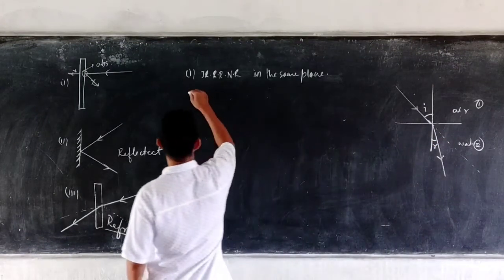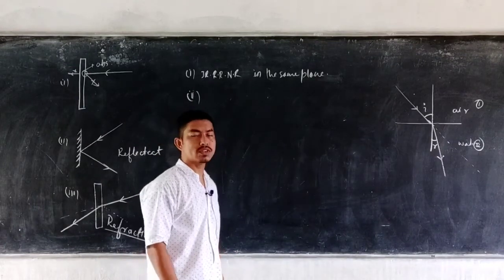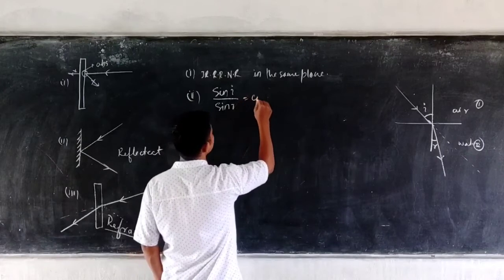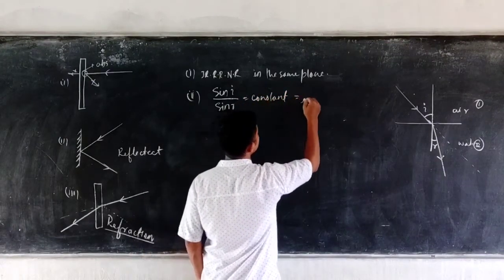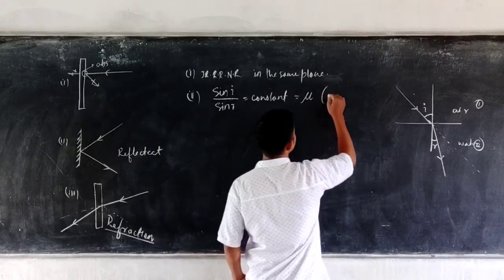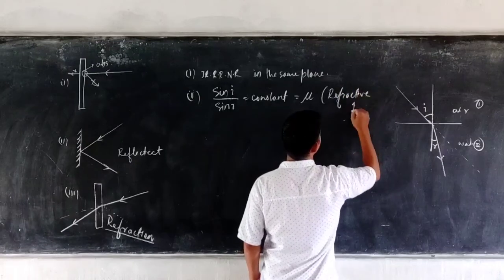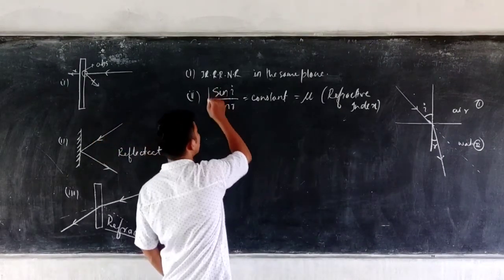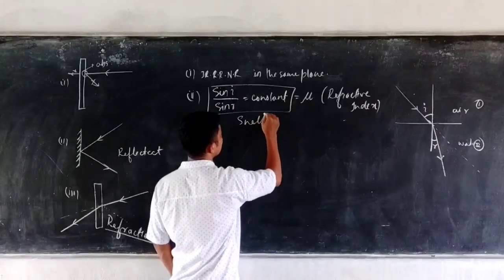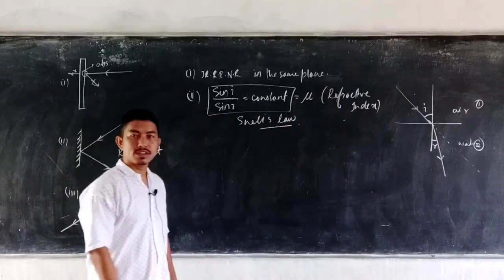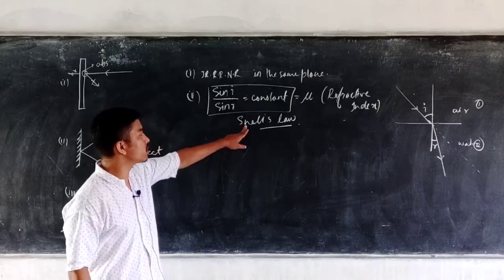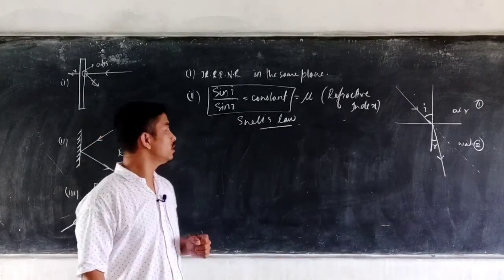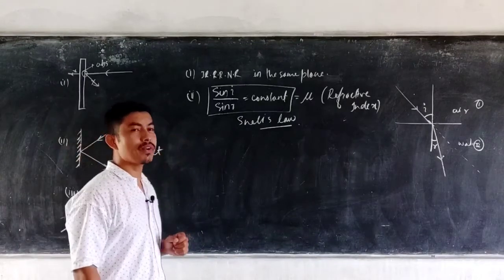The second law tells us that the sine of the angle of incidence bears a constant ratio to the sine of the angle of refraction. That means sin(I) divided by sin(R) is always constant. This constant is also known as the refractive index, given by mu. So the refractive index is the sine of angle of incidence to the sine of angle of refraction. This law is also known as Snell's law. So one answer covers three questions — what is Snell's law, what is the second law of refraction, and what is the refractive index: sin(I) divided by sin(R) equals the refractive index.